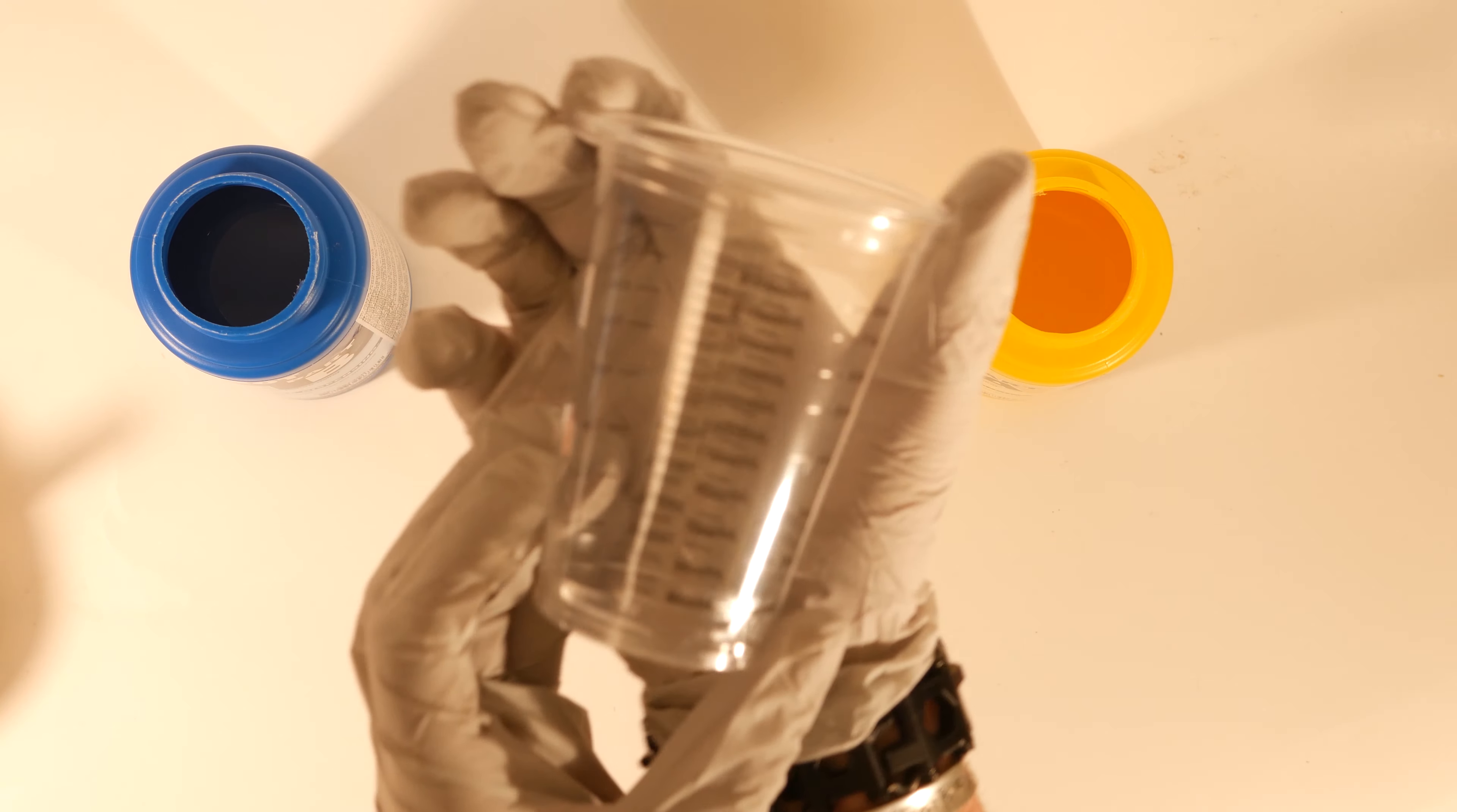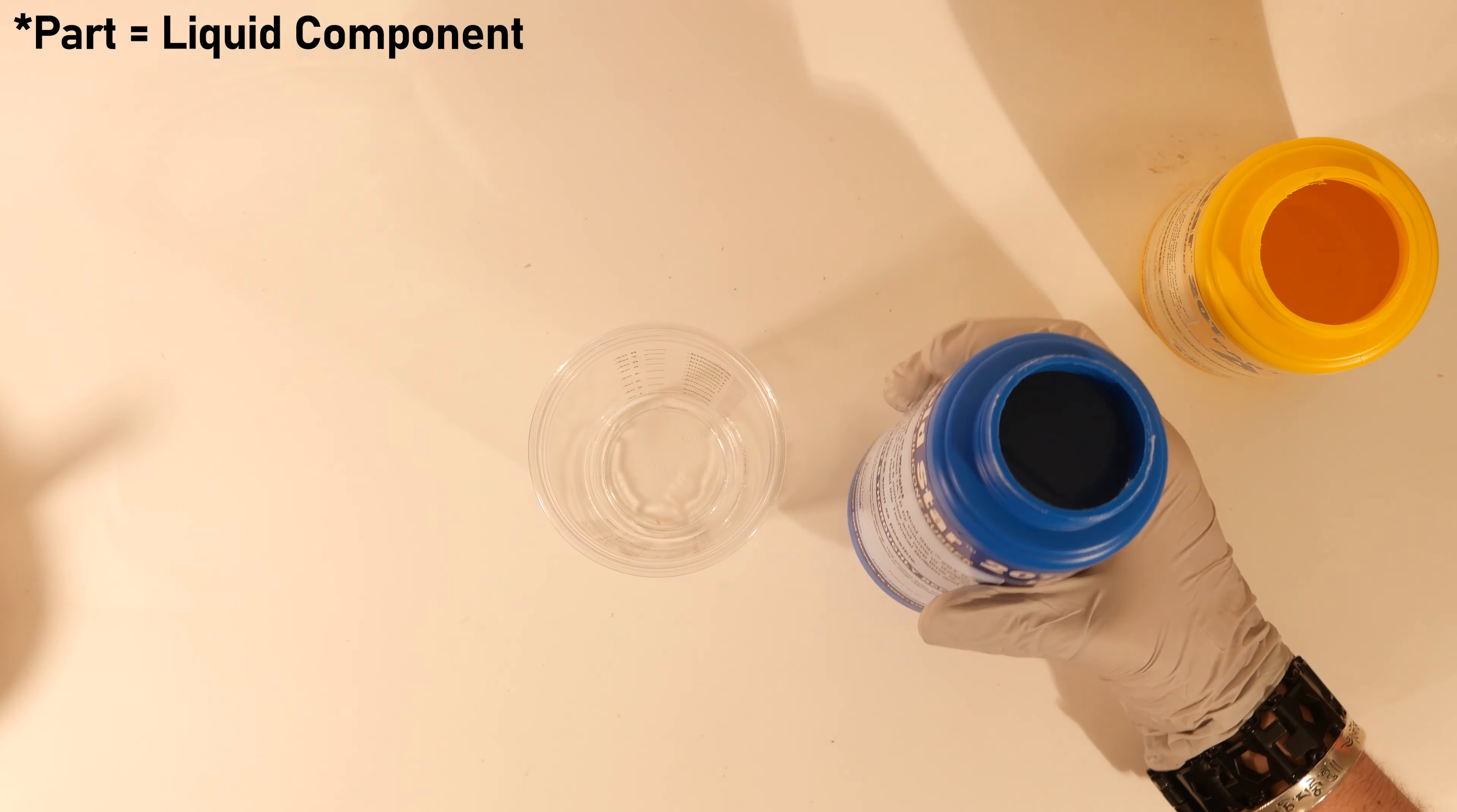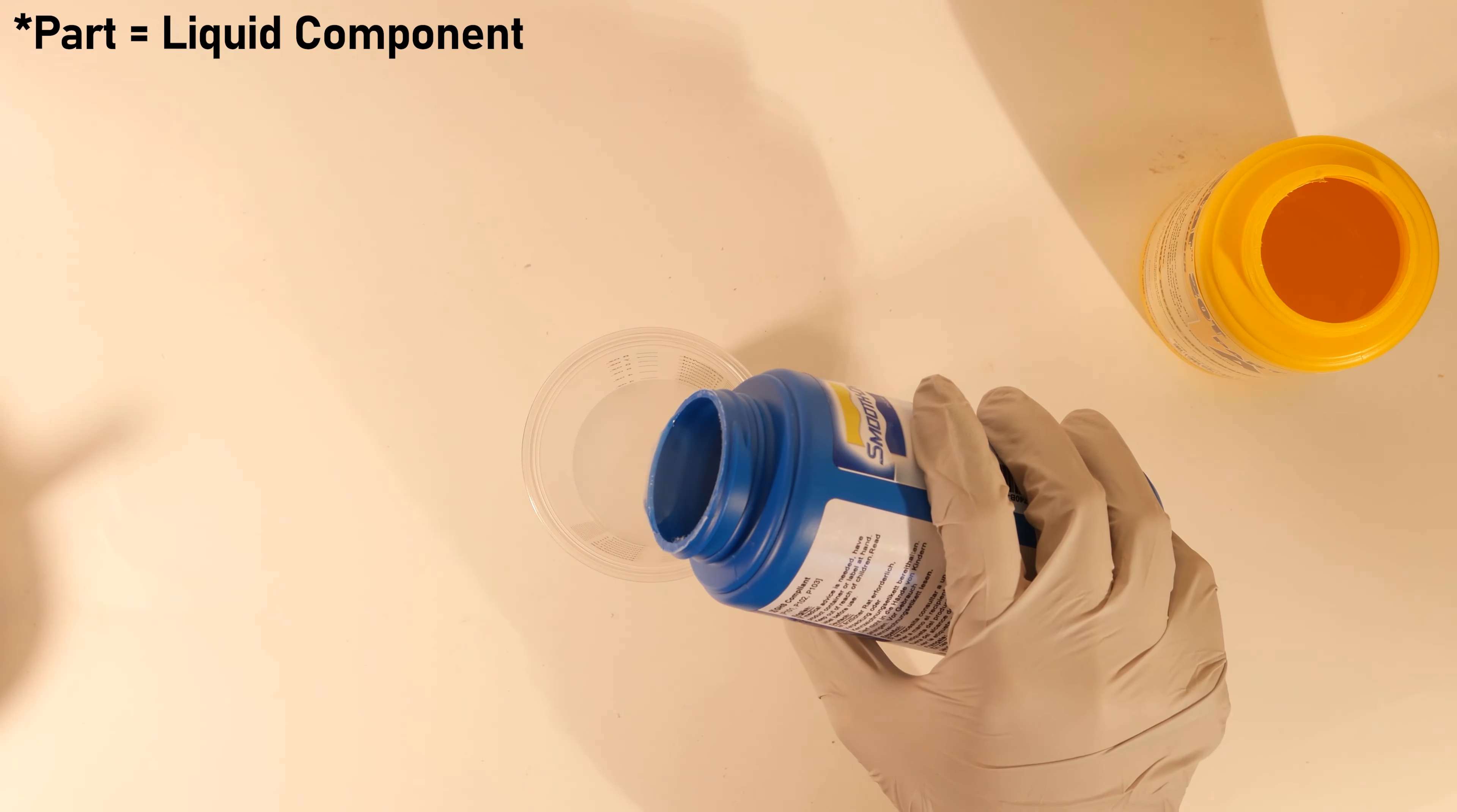I bought these really nice measuring cups that have volume on the side so you can measure it directly into the cup which makes it much easier. But any other measuring type works as well. When doing this I like to have the thinnest part on the bottom that way the thick part once it's already started mixing into itself. So I'm going to pour out 80 milliliters of part B.